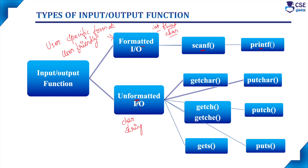Considering the unformatted input/output functions: getchar, getch, getche, and gets are the input functions, and the output functions are putchar, putch, and puts. If you are using getchar to accept input, you should use the corresponding output function, which is putchar.